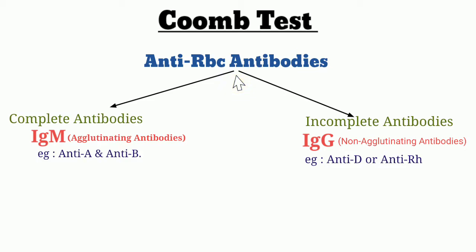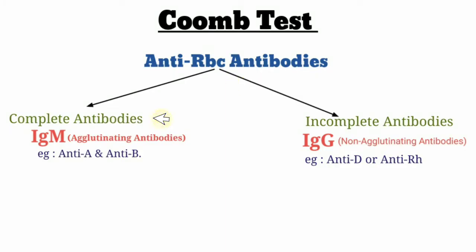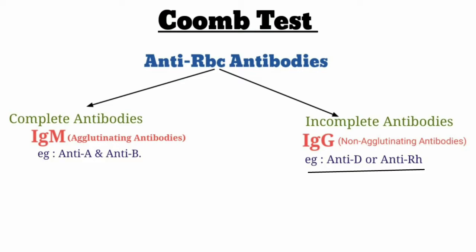Anti-RBC antibodies are basically divided into two types. Complete antibodies — that is IgM — which are agglutinating antibodies. Second are incomplete antibodies — that is IgG — which are non-agglutinating antibodies. IgM class antibodies include anti-A and anti-B from the ABO blood group system. IgG class antibodies include anti-D and anti-Rh from the Rh blood group system.